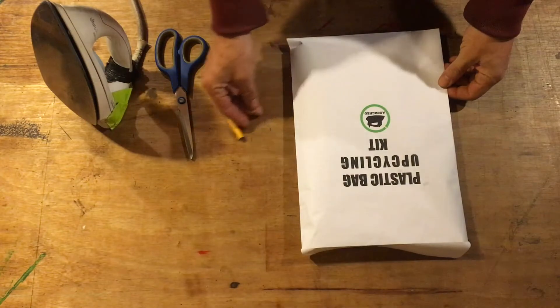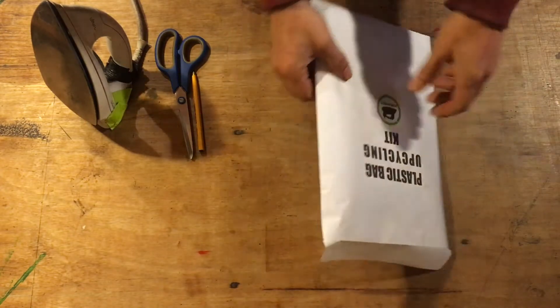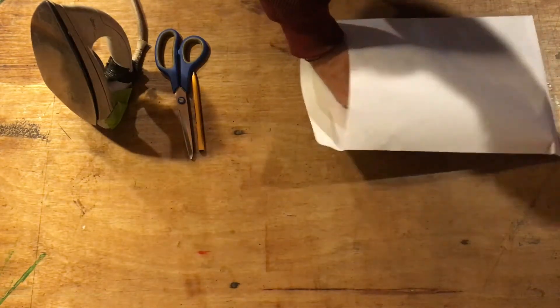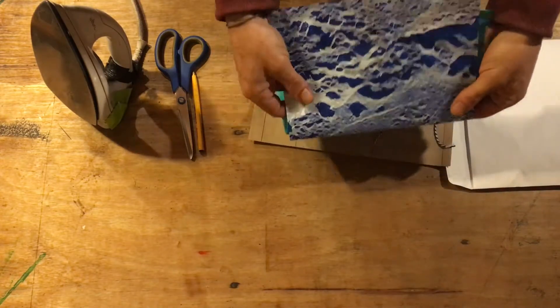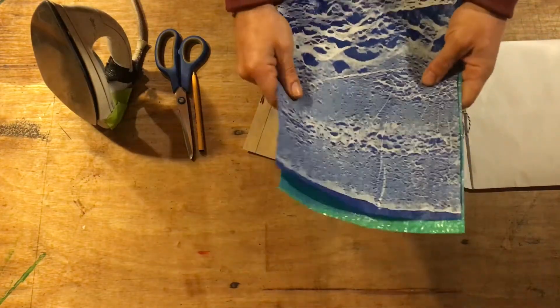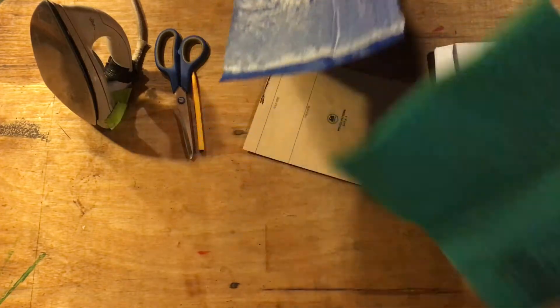In the upcycling kit you will find two pieces of materials. Normally it's one that is decorated and one that is just a plain color.